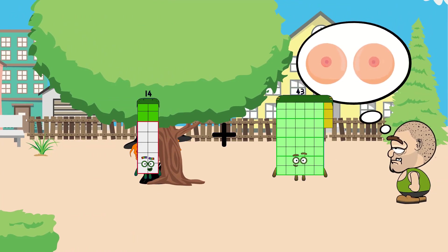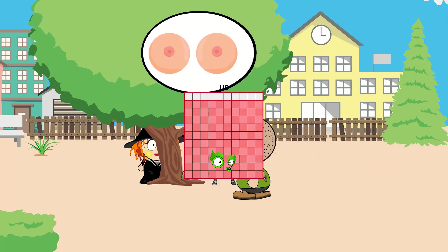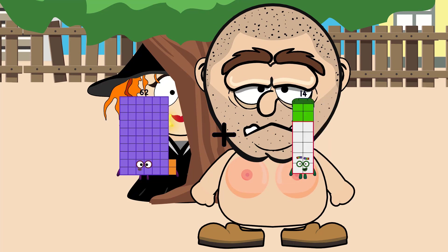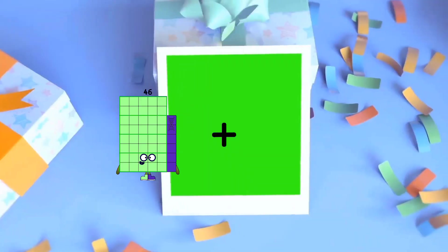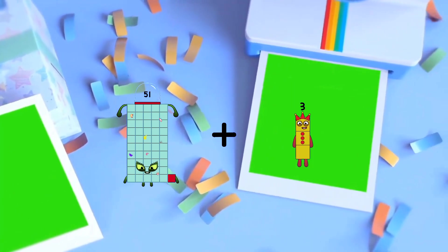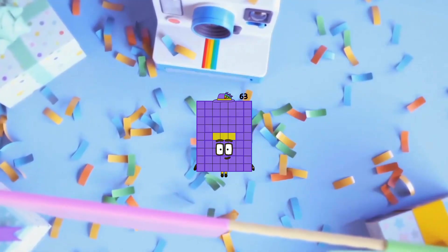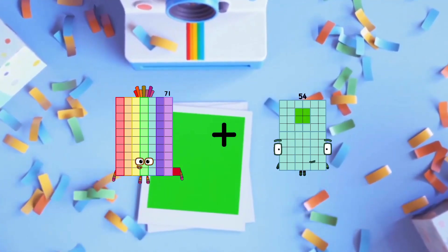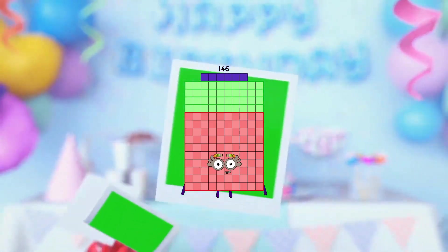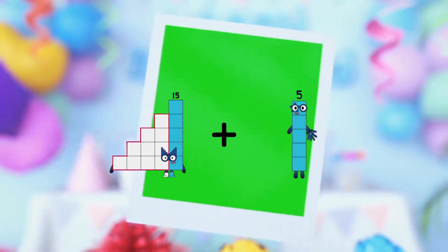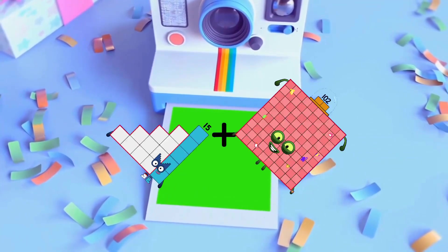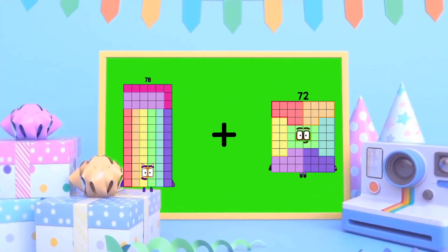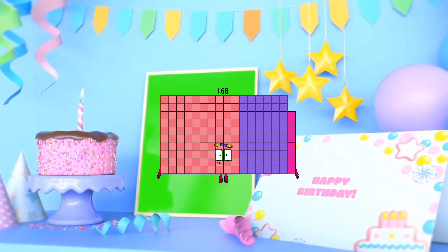14 plus 96 equals 110. 62 plus 14 equals 76. 51 plus 12 equals 63. 71 plus 75 equals 146. 15 plus 102 equals 117. 78 plus 90 equals 168.